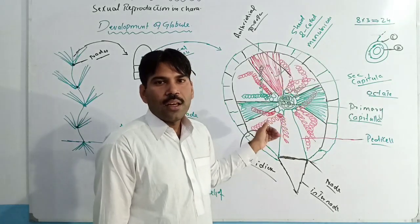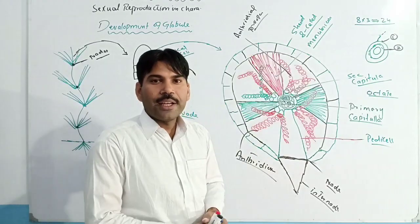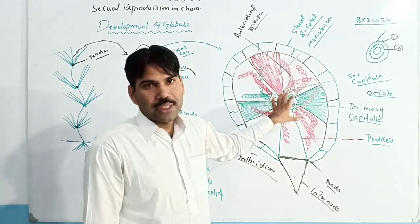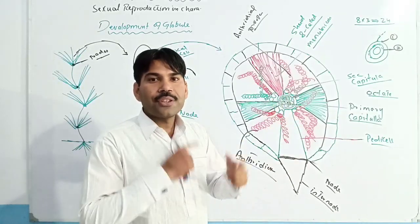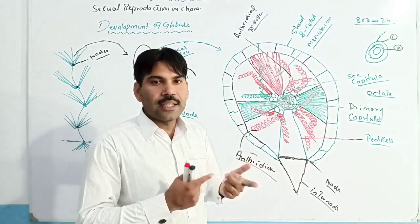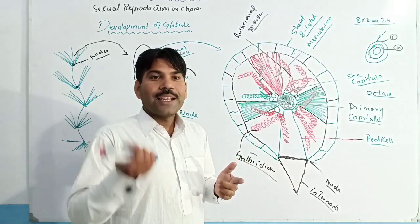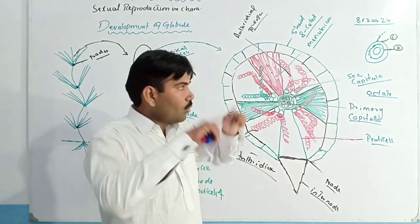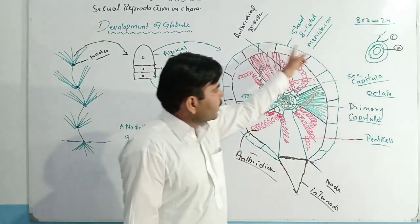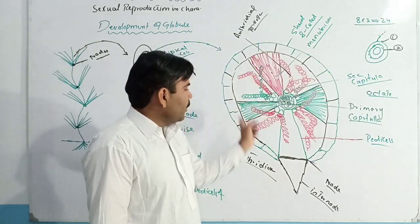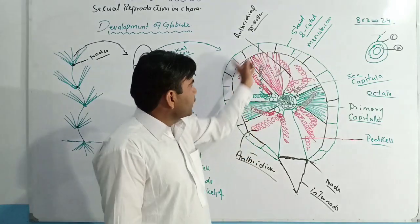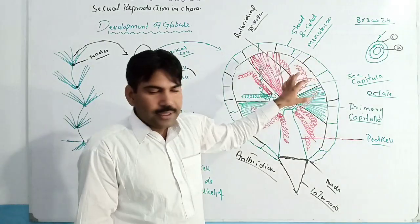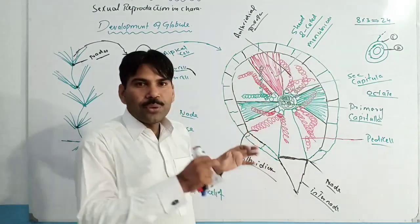Each of the eight cells divides and produces three cells, giving 24 cells arranged in three layers: outer layer, middle layer, and inner layer. The outer layer gives rise to a shield — 8 cells are present in the shield, which expands and produces a globe-like structure, which is why it is known as the globule. The middle layer gives rise to structures known as manubria, which are attached on one side to the shield and on the other side to the primary capitula.